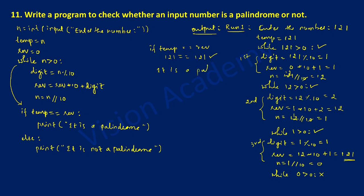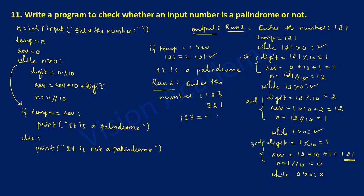Now once again we execute this program, calling it run 2. It will ask the user to enter the number. This time I'm going to enter 123. The reverse of 123 will become 321. Is 123 equal to 321? No, the condition is false. Control directly comes to the else part and it prints 'it is not a palindrome'.